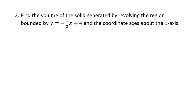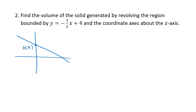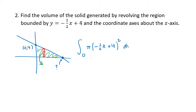Similar problem here. Now we have a region bounded by y equals negative one-half x plus 4 and the coordinate axes, and again we revolve that about the x-axis. Our line has slope negative one-half and y-intercept positive 4, so the point at the top is (0, 4). Our region is this triangular shape and we revolve it about the x-axis. Imagining an individual slice and spinning it around our axis again gives us a disk, so our integral will be pi times our radius squared, where the radius is the height of the rectangle — our function negative one-half x plus 4.